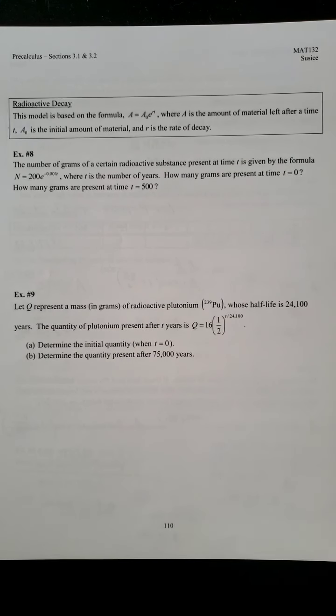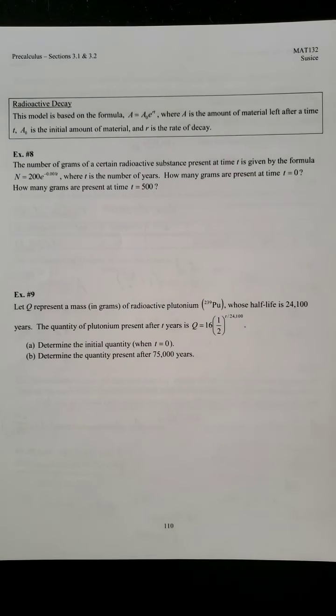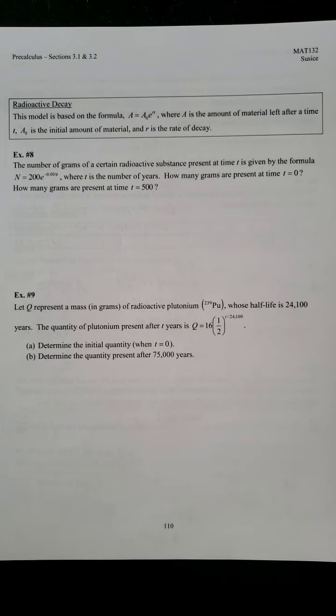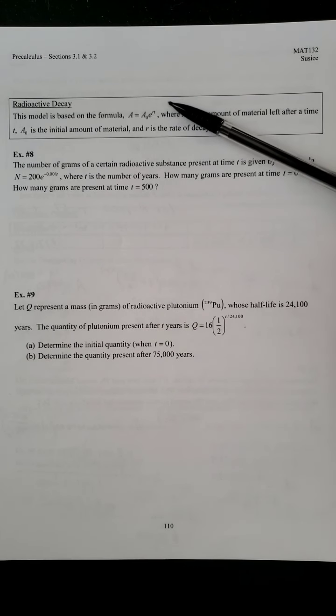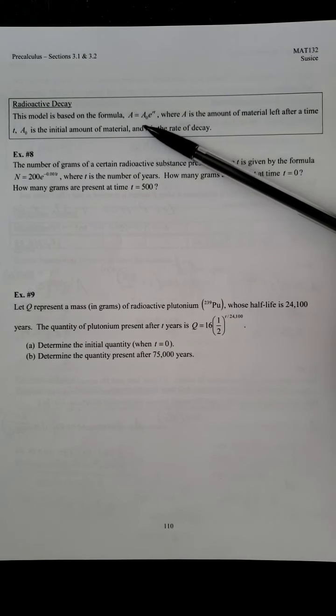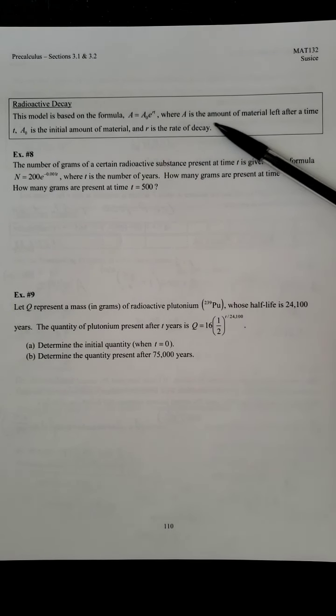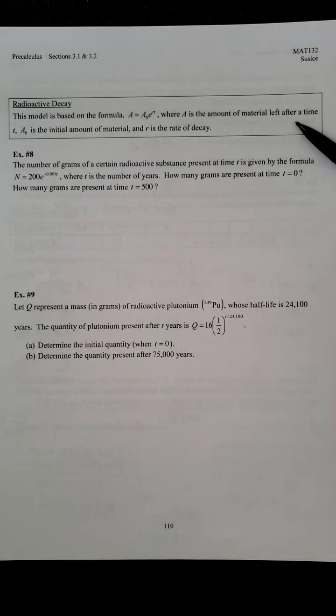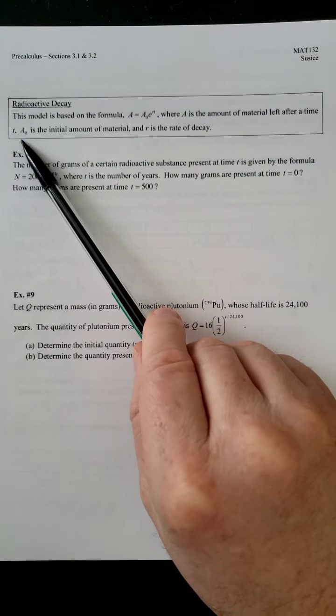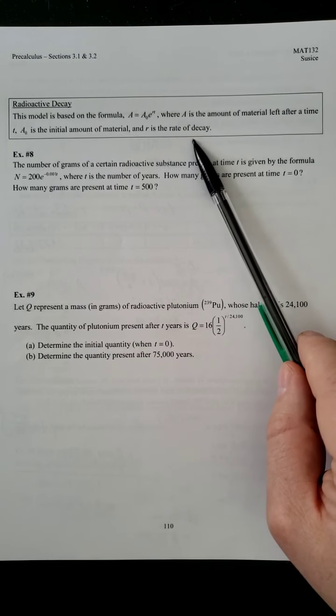Now, these last couple of examples deal with another application of our exponential, our natural exponential function, which is radioactive decay. The model that is pretty much the standard model is something like A equals A sub zero, E to the RT power, where A is the amount of material left after a time T. A sub zero is the initial amount of material, and R is the rate of decay.